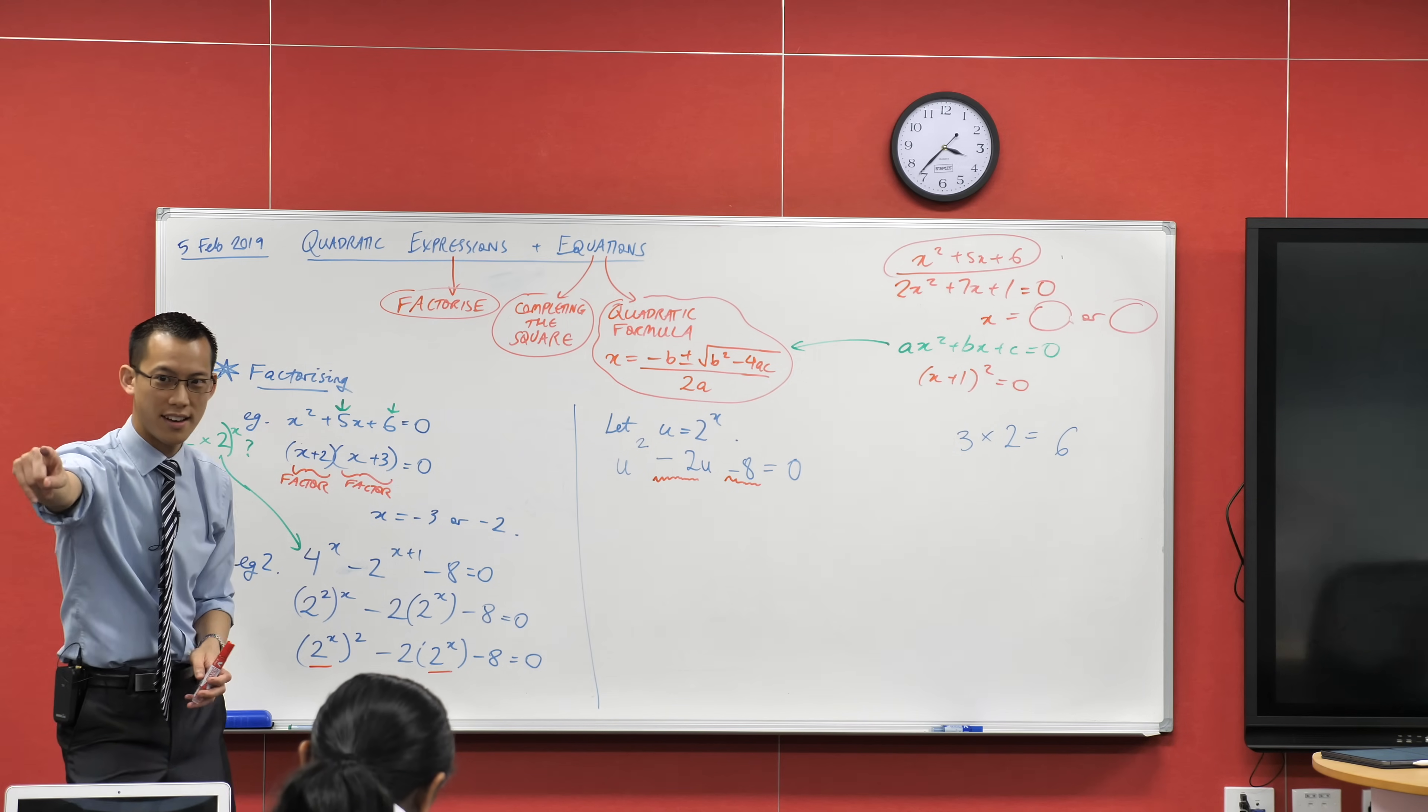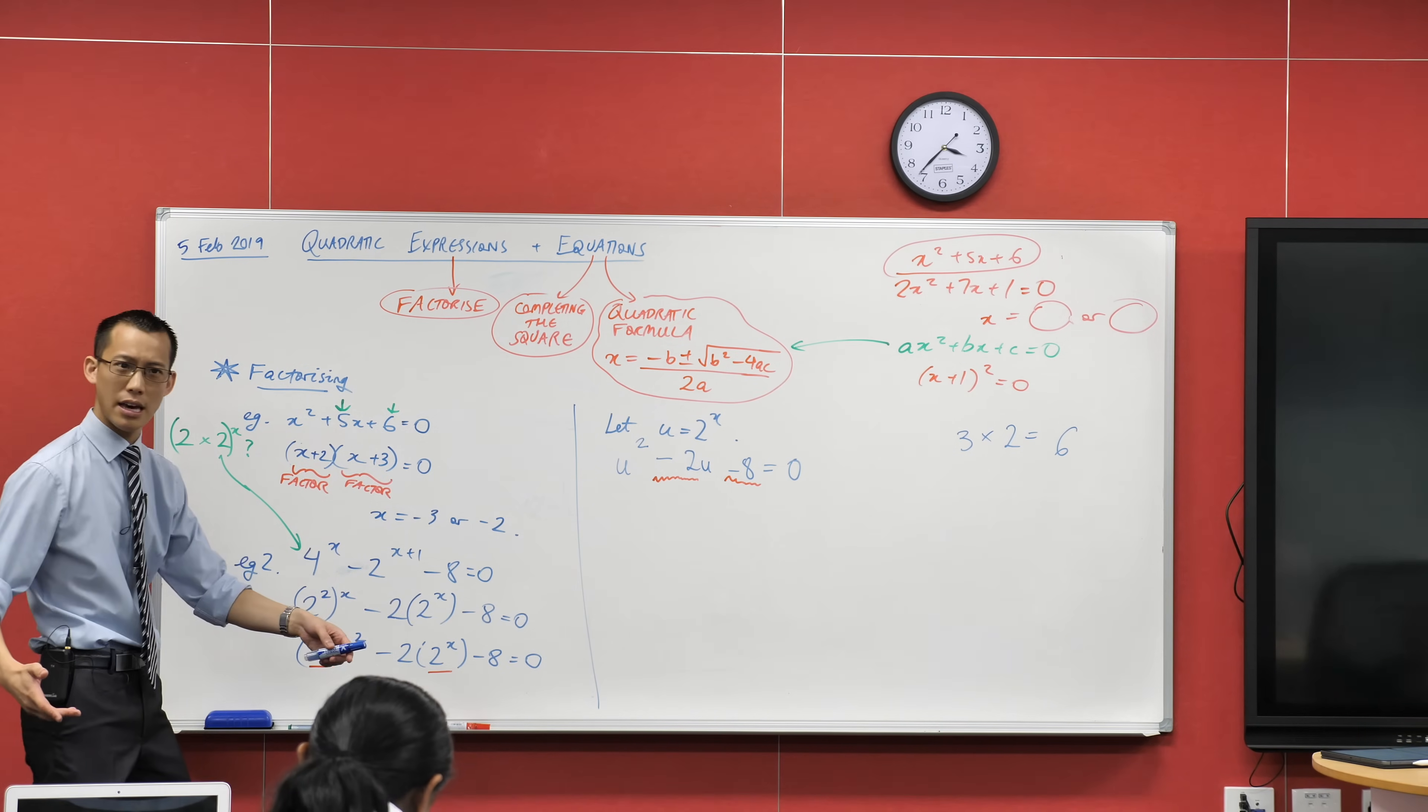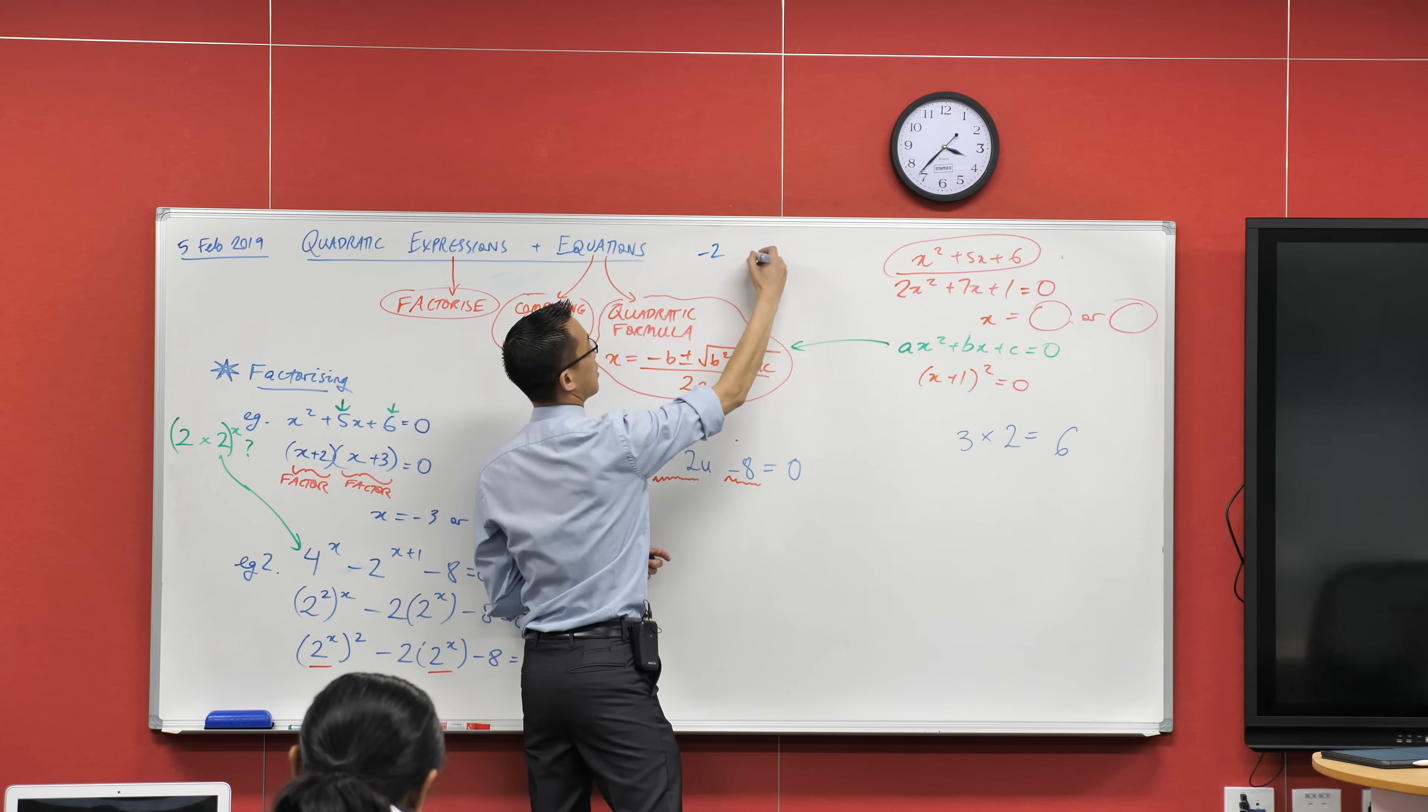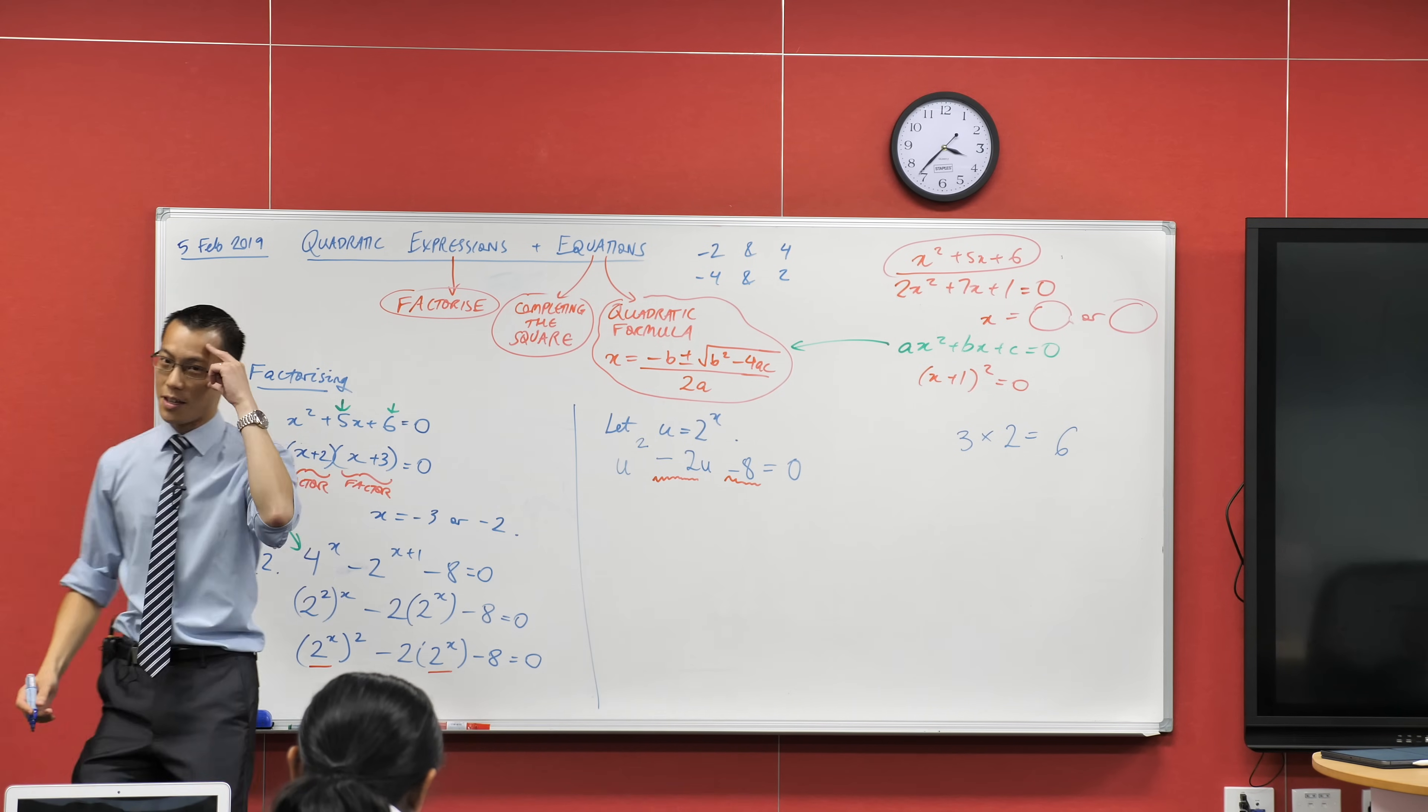Can you think of the pair of numbers, adds to -2, multiplies to -8? Yeah, 2 and -4. 2, -4. Do you agree with that? Do they work out? What do you think? Exactly.